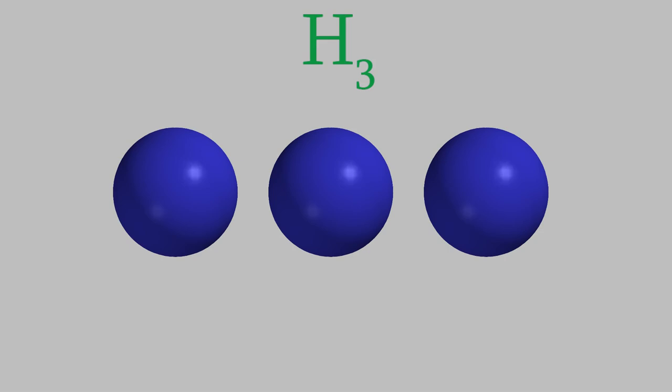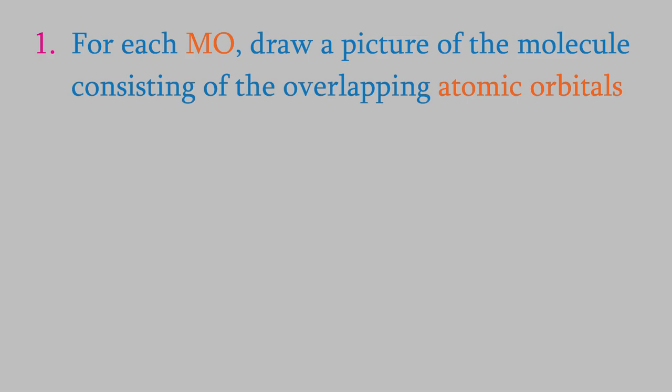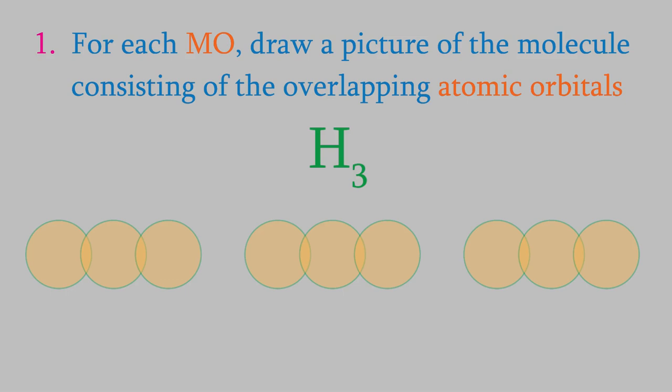To find the shapes of these MOs, we need to think about the sign of the wave function at each atom. It turns out that there's a simple procedure we can use to find out how the sign of the wave functions that represent each MO vary along the different parts of the molecule. Here's how we do it. First, for each molecular orbital, we draw a picture of the three atomic orbitals for the molecule. The H3 molecule has three different MOs, so we draw three different pictures, each of which consists of three overlapping circles representing a 1s atomic orbital.